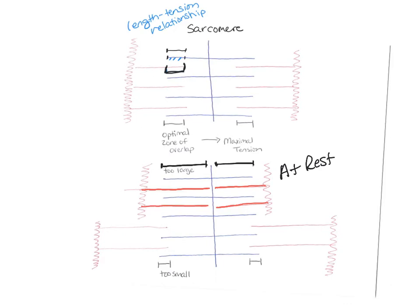On the other hand, if the sarcomeres are stretched too far apart, then the thin filament has been stretched too far from the thick filament. Now we have a really small zone of overlap, and there's not very much space where the thin and thick, or actin and myosin, molecules overlap. So we don't have very many myosin heads that can bind to that thin filament. If the zone of overlap is too small, we're not going to get a great amount of tension either, because we only have a few cross bridges here that can actually function.